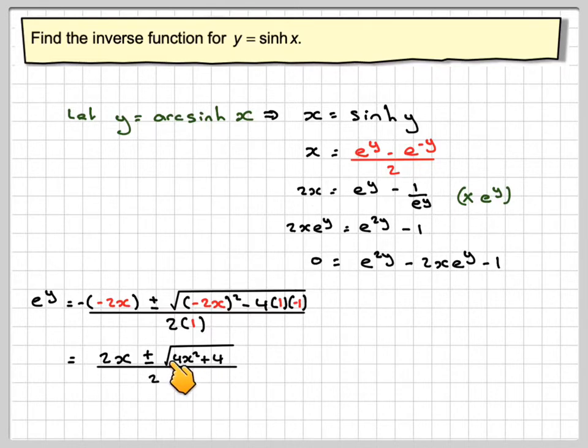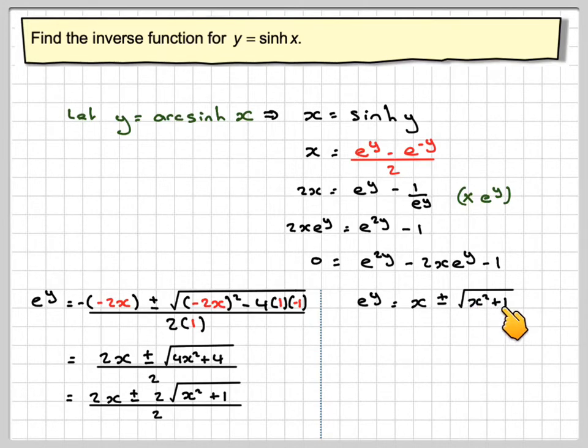The 4 can come out and that will now become 2x plus or minus 2, because when you take the square root of 4 you get 2, times the square root of x squared plus 1, over 2. So the 2s will cancel with this 2 here, so we're left with e to the y is x plus or minus the square root of x squared plus 1.